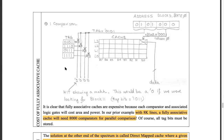Every set of blocks has a dedicated cache line. Block numbers 1, 5, 9, and 13 all give remainder 1 when divided by 4, so they are all mapped to only line 1. Block numbers 0, 4, 8, 12 are all mapped to line 0 because the remainder is 0. There are only four remainders possible if you have four cache lines.